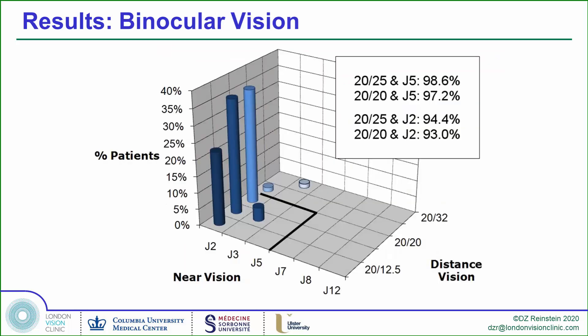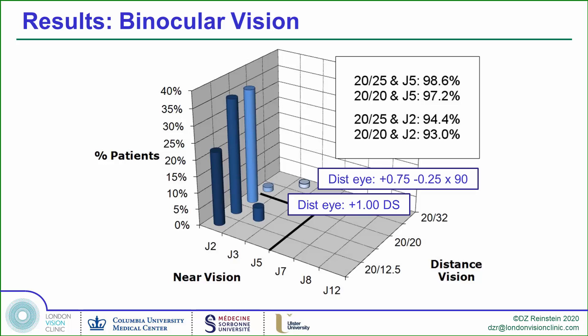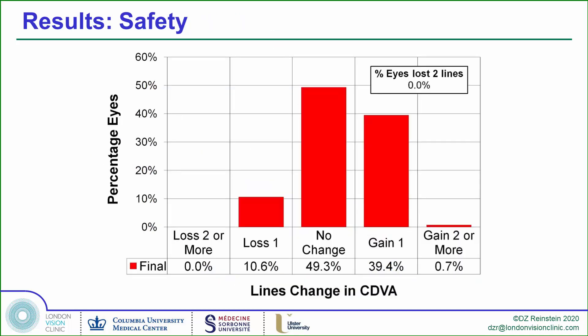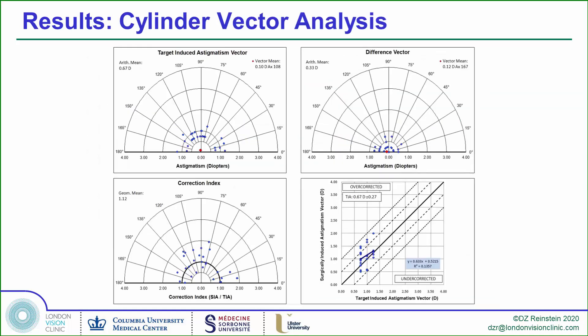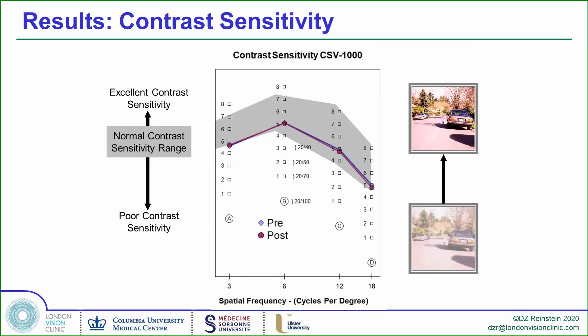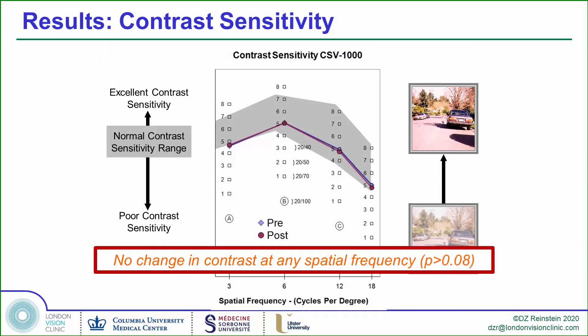This is a three-dimensional representation of the post-op distance and near visions. Out of these 71 patients, only two were outside of the 20/20 J3 bracket, and both of those distance eyes would be easily enhanced onto target. The safety is excellent with no eye losing two lines and many gaining lines. Stability is excellent, control of cylinder is superb as expected for LASIK, and there is no change in contrast sensitivity at any spatial frequency.